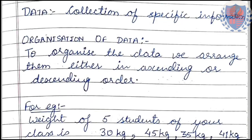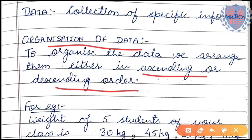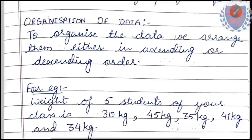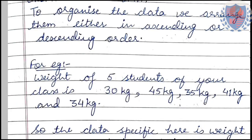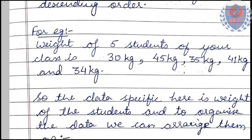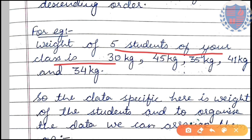One of the most important topics after data is organization of data. Once we collect the data, organization is crucial. To organize the data, we arrange them either in ascending or descending order. Unless they are arranged, we are not able to conclude any information from those data. For example, the weight of five students: one student is 30, then 45, then 35, then 41, and 34 — collected randomly.